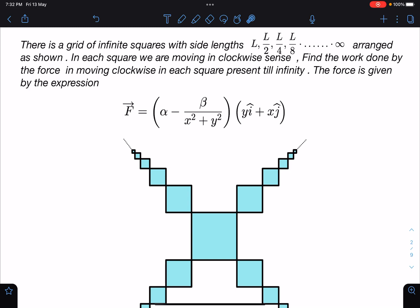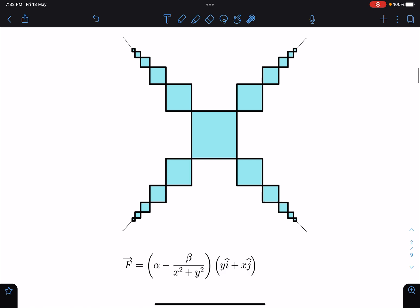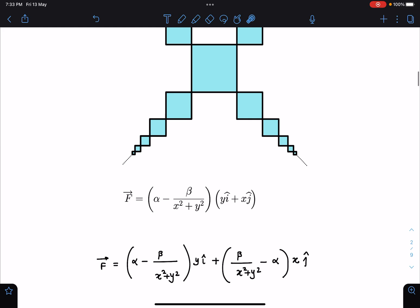This force which is given by alpha minus beta over x squared plus y squared times y i-hat plus x j-hat. In the first look we don't get any idea how to proceed with such type of force. So what we can do is let's rearrange these terms. This term times y i-hat and this term times x j-hat. These x squared plus y squared terms we can separate.